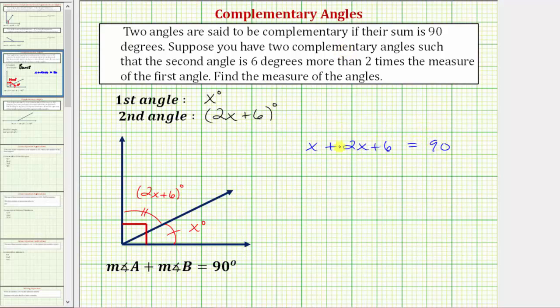And now we'll solve for x. For the first step, we'll combine the like terms on the left side of the equation. x plus two x, or one x plus two x, equals three x. So we have three x plus six equals ninety.